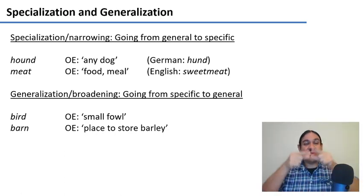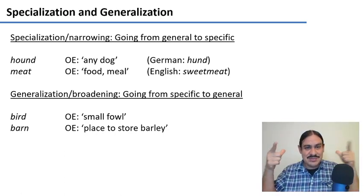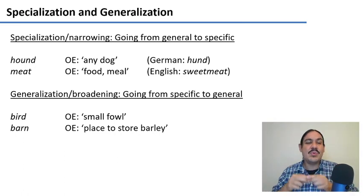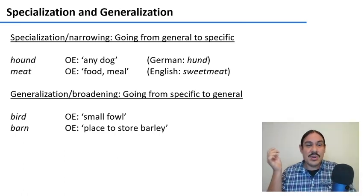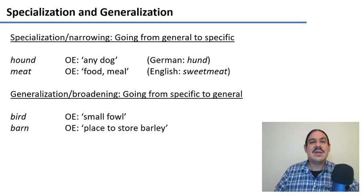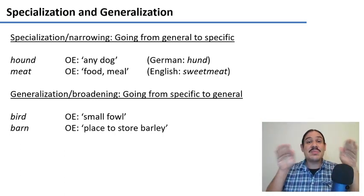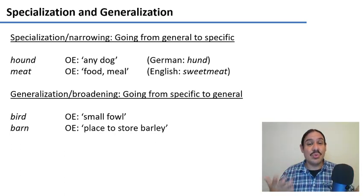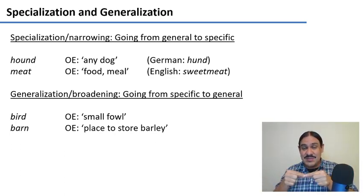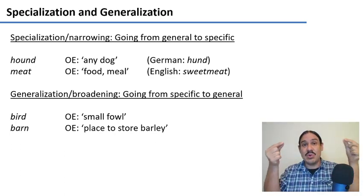The opposite process is generalization. For example, 'bird' used to mean small fowl, but now we use it for any kind of bird. 'Barn' used to mean just a place to store barley, but now we use it for any kind of agricultural storage. So this is taking a specific word and making it more general.